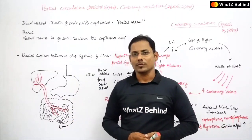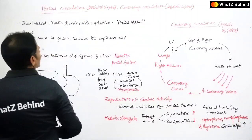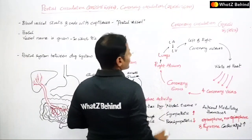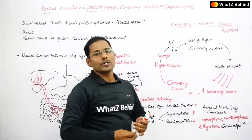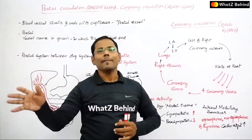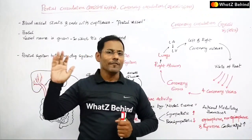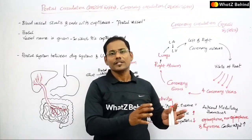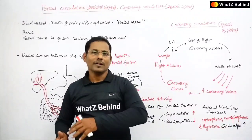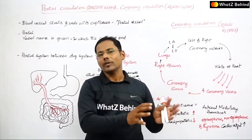So let's look at the first topic: portal circulation. As we have already discussed, the general circulatory system starts with arteries, then capillaries, and ends with veins. In the case of arteries, blood flows into capillaries; in the case of veins, blood flows out. Capillaries start and then drain into veins — that's how general circulation works.